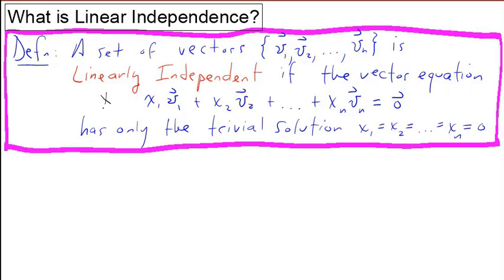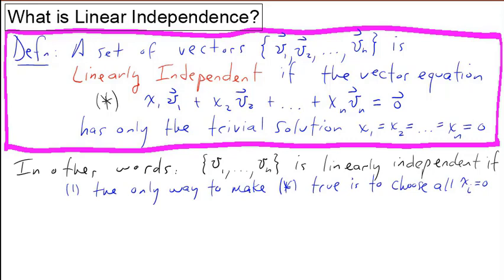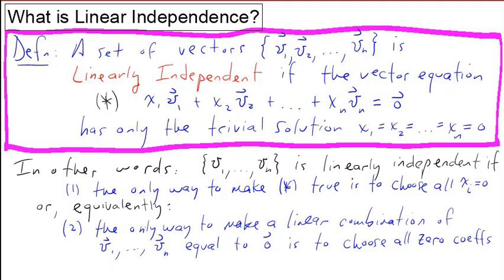Let's label this equation star so we can refer back to it. In other words, v1 down to vn is linearly independent if the only way to make star true is to choose all the x's equal to 0, or equivalently, the only way to make a linear combination of v1 down to vn equal to 0 is to choose all 0 coefficients. These are both equivalent to saying that the set is linearly independent.